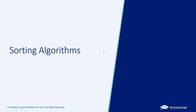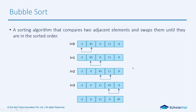Now we're going to start with the sorting algorithms. The first one we're going to learn is bubble sort. A bubble sort is a sorting algorithm that compares two adjacent elements and swaps them until they are in sorted order. The algorithm works by repeatedly swapping adjacent elements if they are in the wrong order. In each pass, the largest element bubbles up to its correct position at the end of the array.